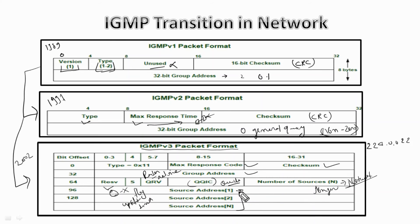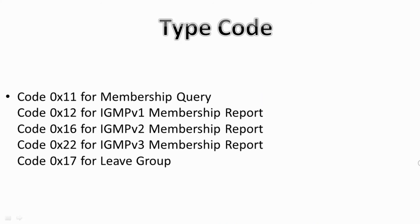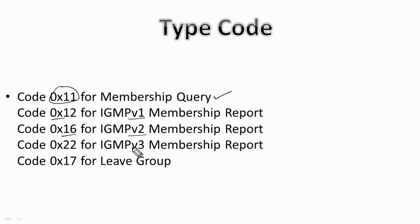In IGMP version 3, the type field includes different codes: 0x11 for membership query, 0x12 for IGMP version 1 membership report, 0x16 for IGMP version 2 membership report, 0x22 for IGMP version 3 membership report, and 0x17 for leaving the group.